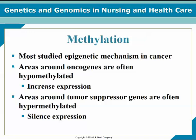Methylation is the most studied epigenetic mechanism in cancer. The areas around oncogenes are often hypomethylated, which increases their expression. Areas around tumor suppressor genes are often hypermethylated, which silences their expression.